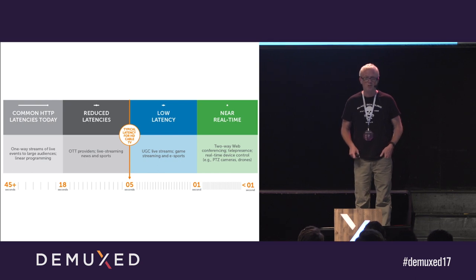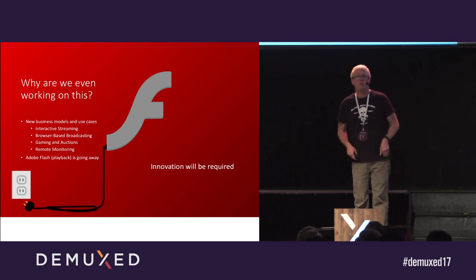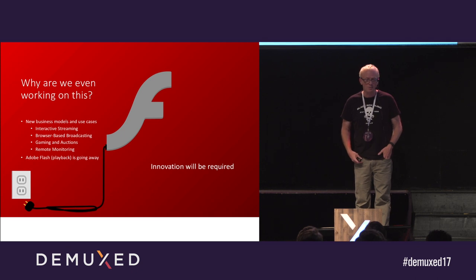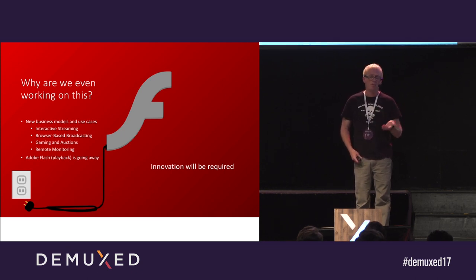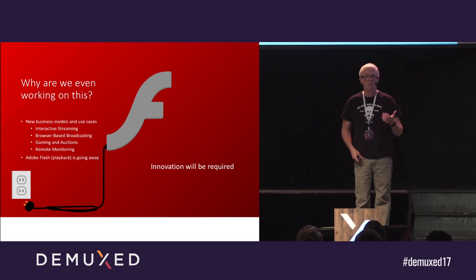What you start to look at more and more is that there are actual use cases that actually require low latency. You're looking at new use cases which drive new business models. You talk about Periscope and Twitch. The reality is interactive streaming and browser-based broadcasting, gaming, auctioning — all these types of use cases are actually requiring more low latency as the interaction grows in them.